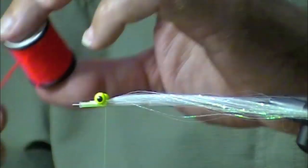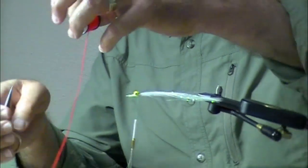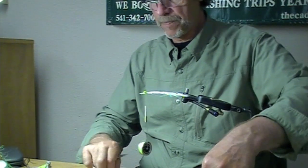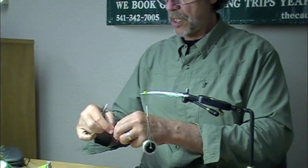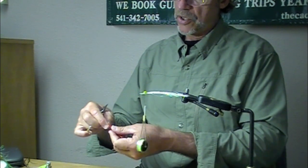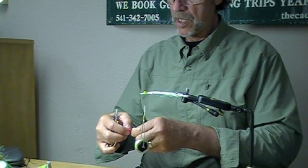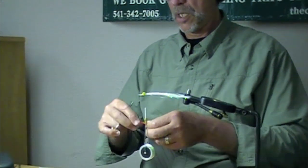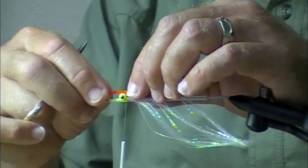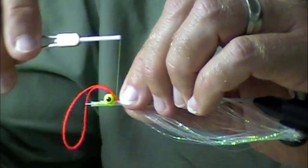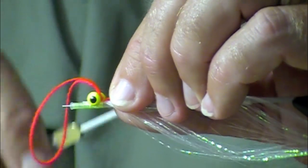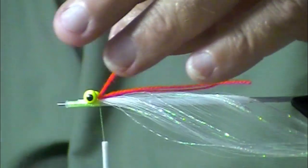Chinese red uni yarn - grab a chunk of it and double it. Put a chunk there and tie it in. One, two, three, four, five, six turns exactly. Never seven.